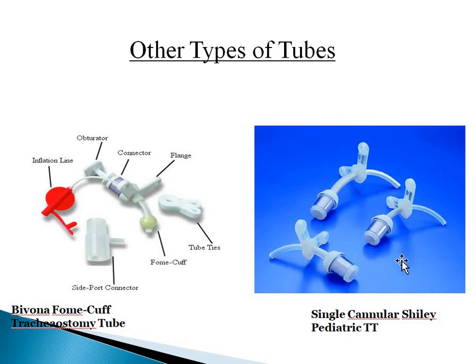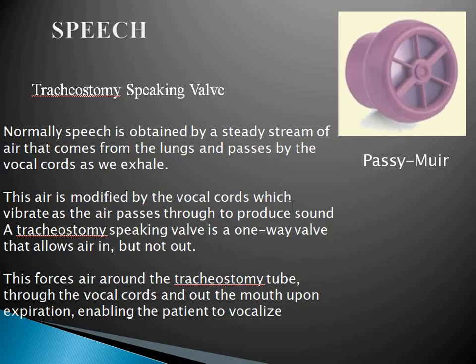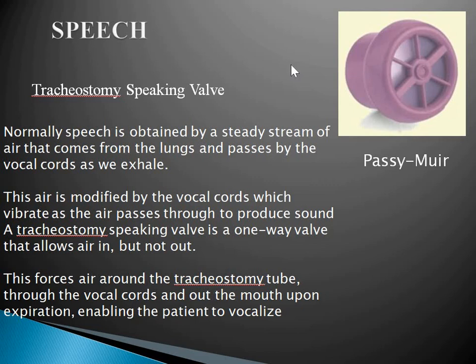There is a single cannula Shiley pediatric tracheostomy tube. Regarding speech: normally speech is obtained by a steady stream of air from the lungs passing by the vocal cords on exhalation, modified by the vocal cords vibrating to produce sound. The Passy Muir speaking valve allows air in but not out, forcing air around the tracheostomy tube through the vocal cords and out the mouth upon expiration, enabling the patient to vocalize.